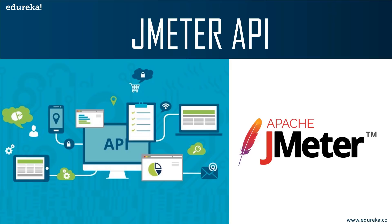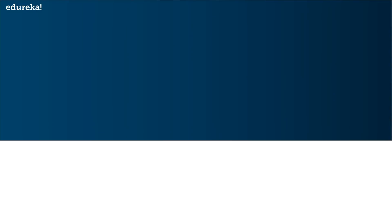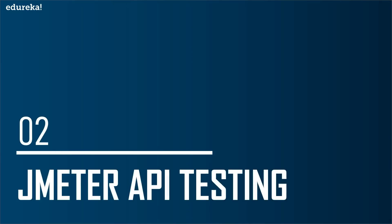At times you need to test your API to know if it's performing the job perfectly — if it's actually carrying the right information from the client to the server. With the help of JMeter, we can do this API testing and also see how much load your API can handle. Now let's move on and have a look at the steps involved in API testing in JMeter.